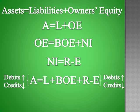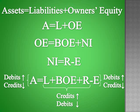Now if you can remember the expanded accounting equation, it's only a little bit more difficult to remember that the accounts on the ends — assets and expense accounts — are increased with debits and decreased with credits. And the accounts in the middle — liabilities, owner's equity, and revenue accounts — are increased with credits and decreased with debits.